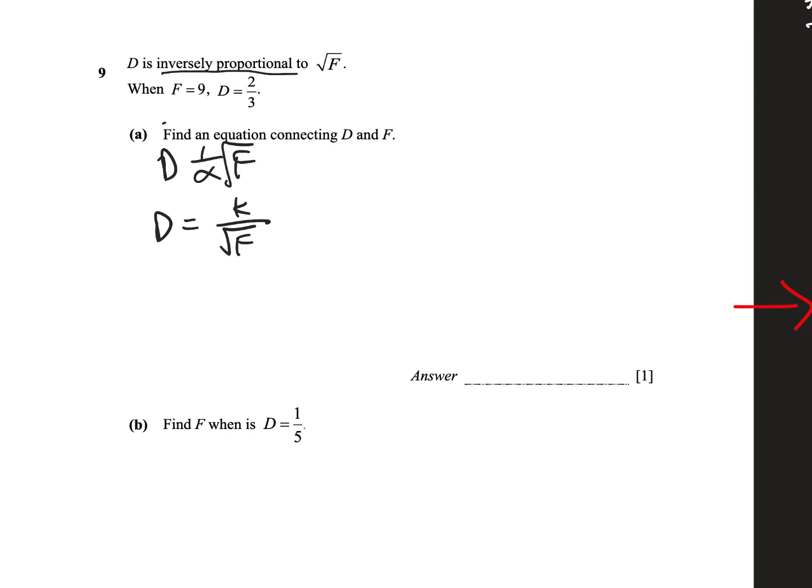Now, they tell us that when F equals to 9, D is 2 over 3, so actually, if you realize, if we just substitute these values in, then we can see that when D is 2 over 3, we leave K alone, and we get the square root of 9, we can actually solve for K, and so we can just solve for K this way, and square root of 9 just simply is 3, let me bring it here.